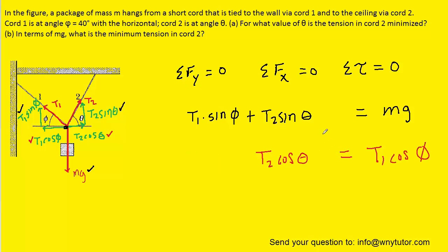Now we go back to the question and it's asking us to find a value of theta that will minimize the tension in cord 2. So in essence we're trying to minimize T2, which means we're going to have to come up with a function where we have T2 isolated on one side. In particular we need T2 as a function of theta.